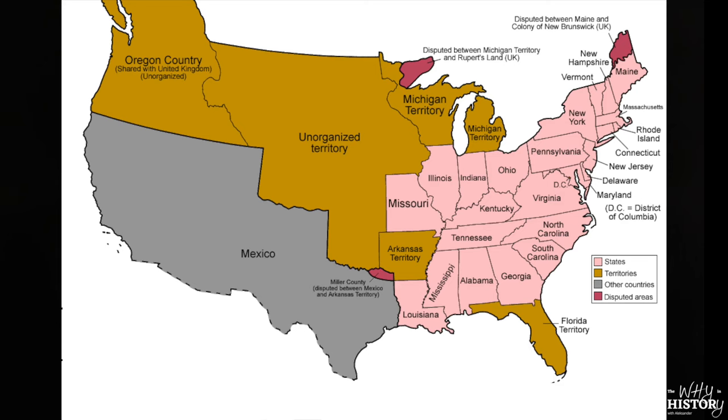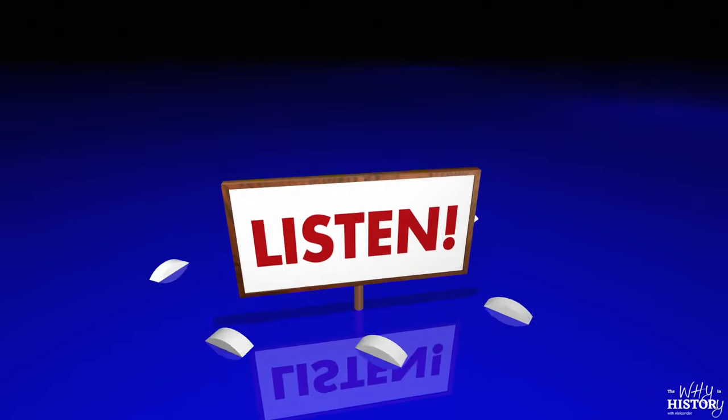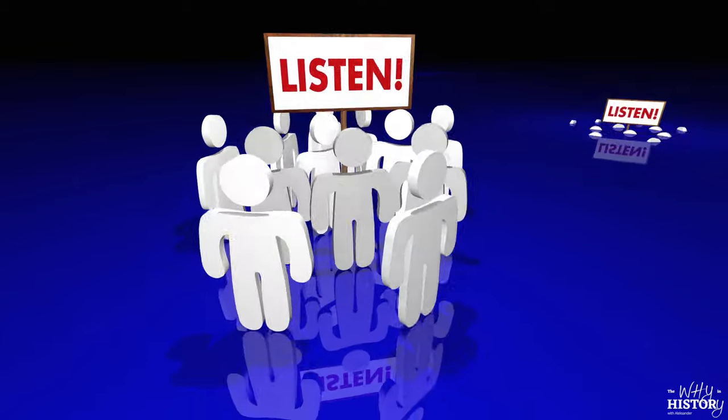But almost all of these new people came from the U.S., not Mexico. American settlers were bringing with them the American way of life — namely, slavery. So when Mexico banned slavery in 1829, the American settlers in Texas didn't listen.